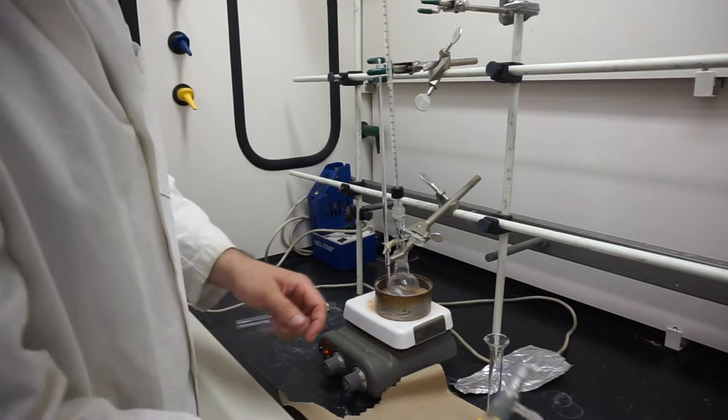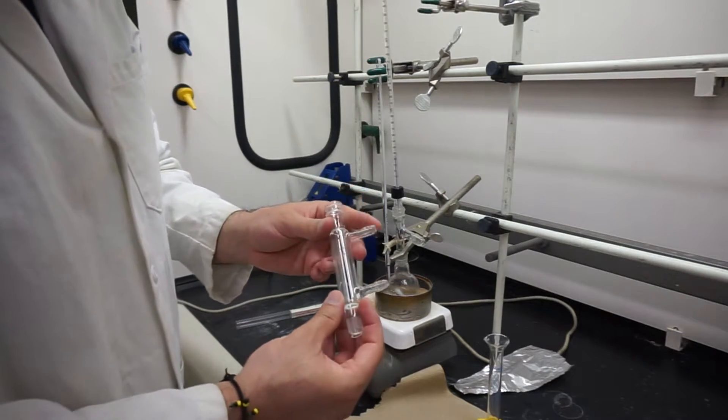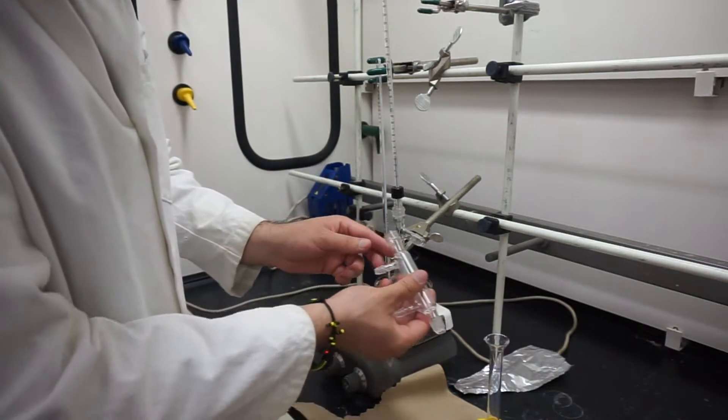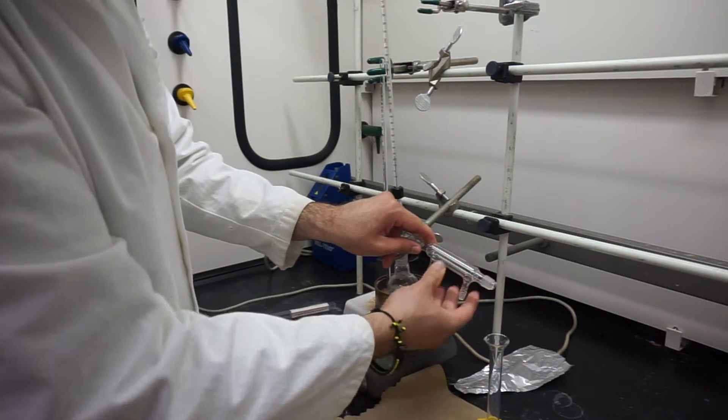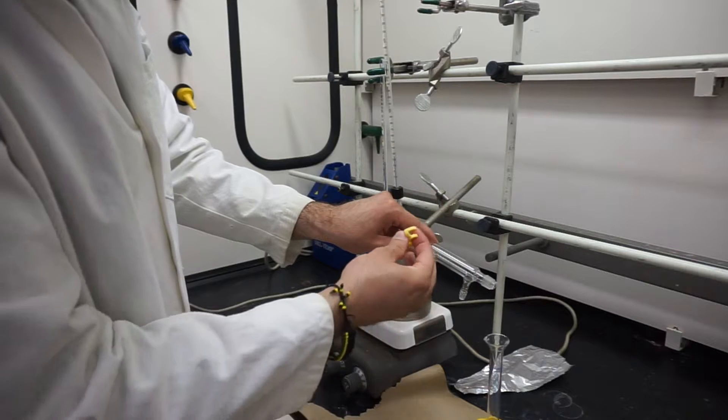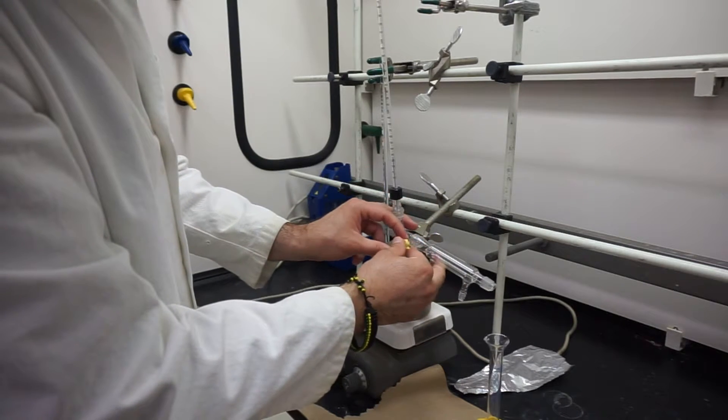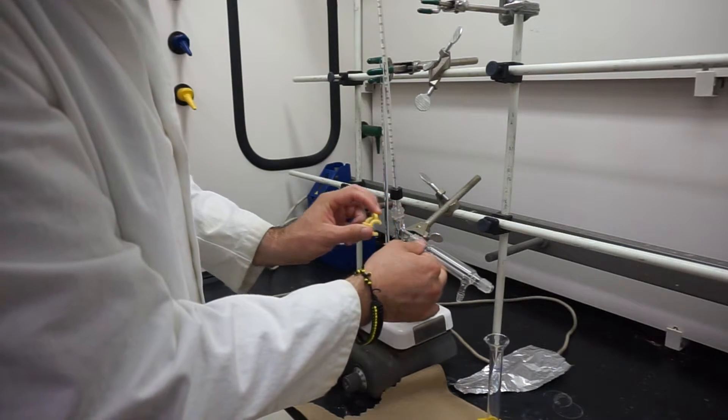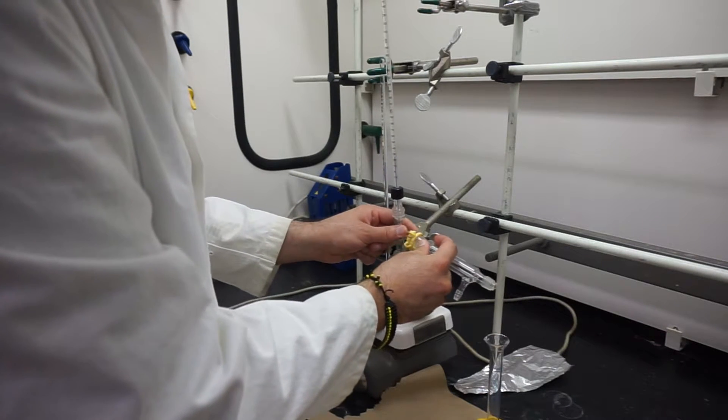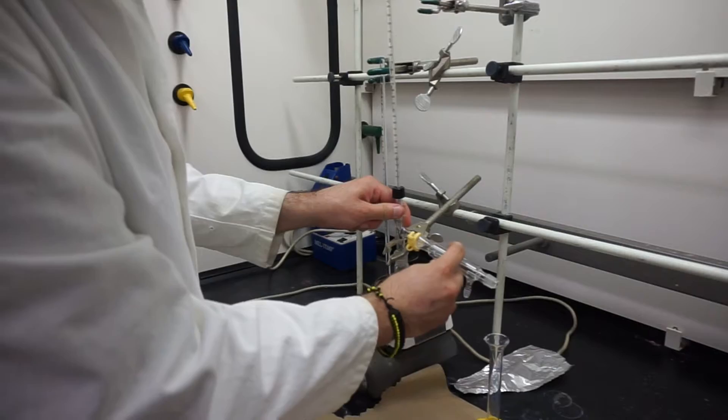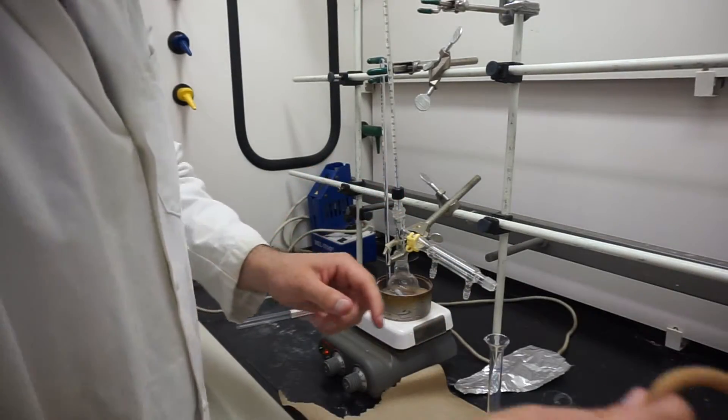We're going to take our water-cooled condenser and attach it at this joint with the nozzles facing down, and we're going to use this Keck clip to help secure it together. We can Keck clip the two pieces together, and it should hold nicely.